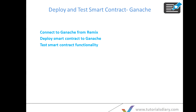Hello and welcome to Tutorials Diary. This is lesson 4 of the Ethereum development course for beginners. If you haven't gone through my last three videos — lesson one, two, and three — I'd recommend those sessions, as we covered how to set up your development environment for Ethereum, how to build a smart contract in the Remix IDE, and how to compile and deploy on the JavaScript Virtual Machine. In this lesson, we'll cover Ganache blockchain: how to connect to it from Remix IDE, how to deploy a smart contract to Ganache, and how to test smart contract functionality deployed on the Ganache blockchain.